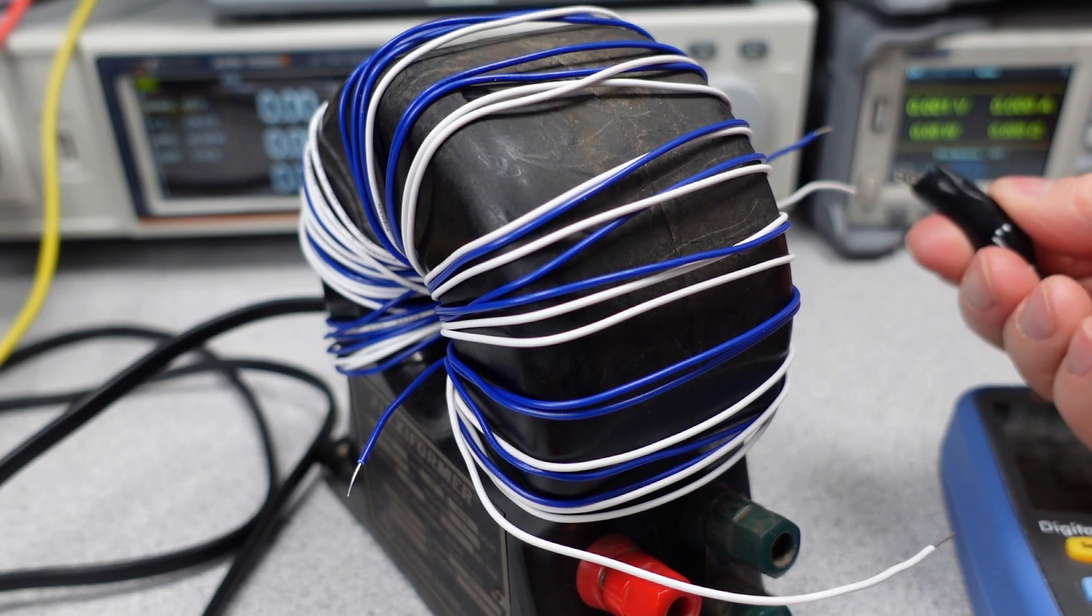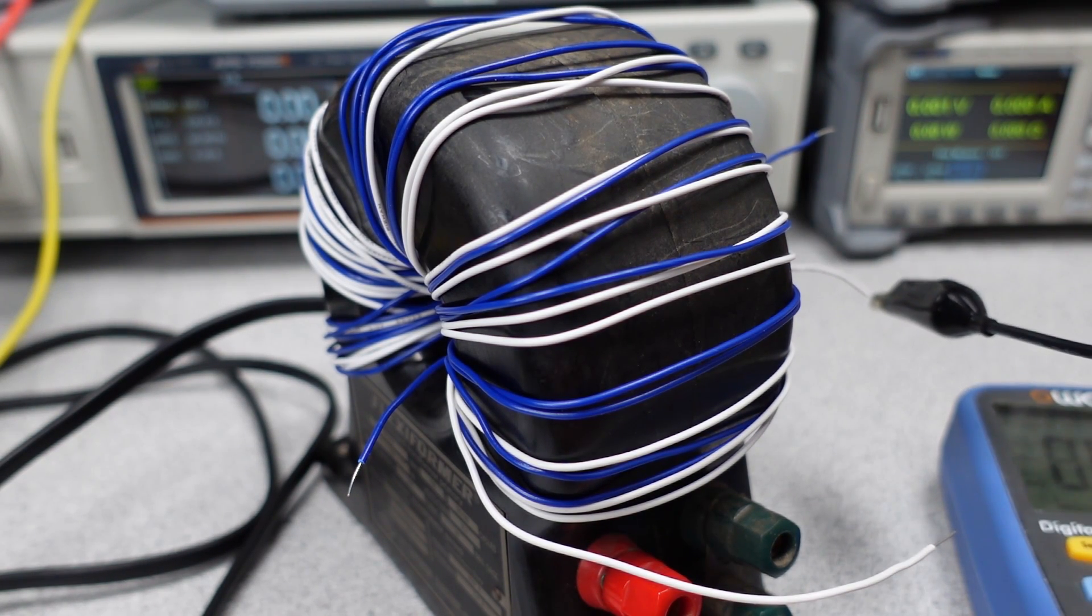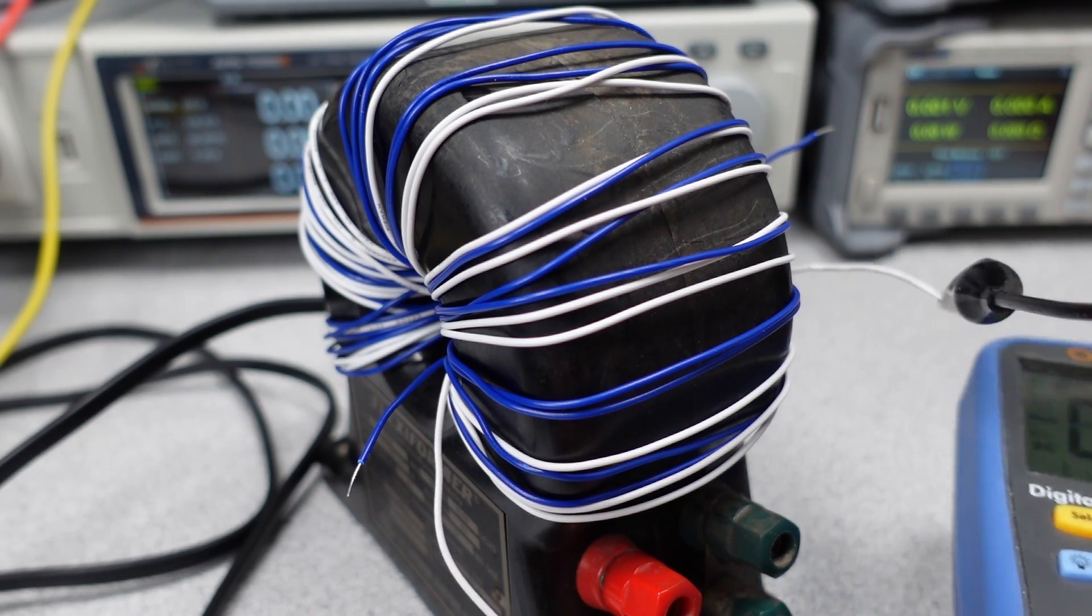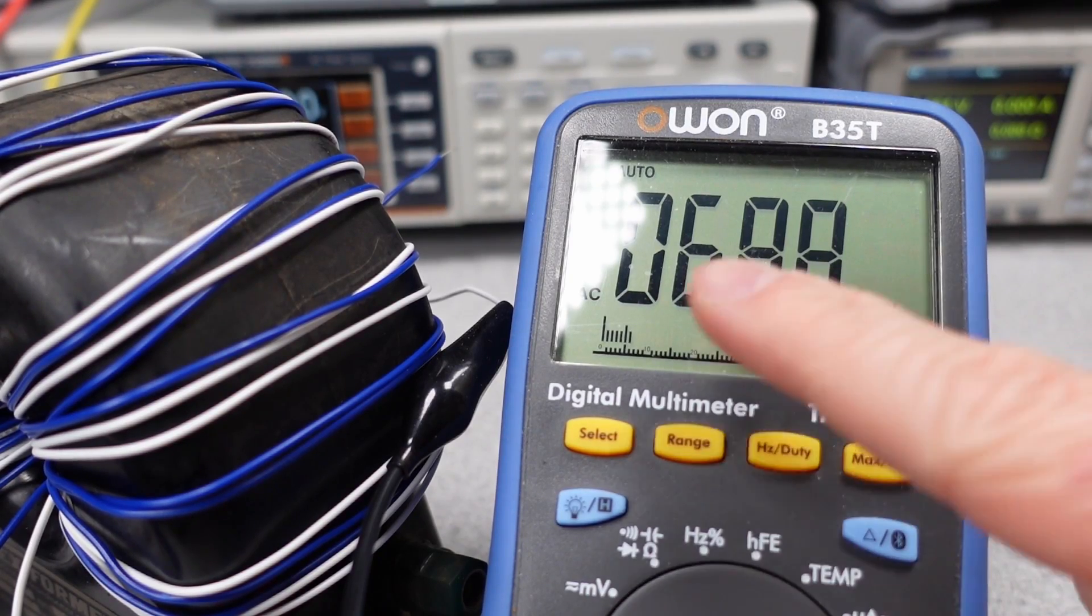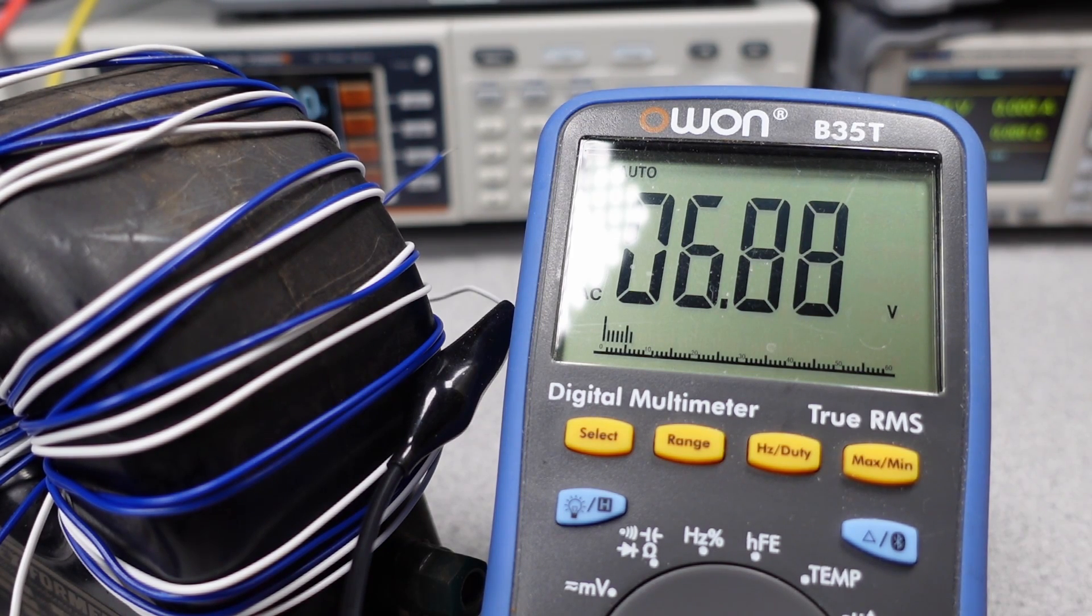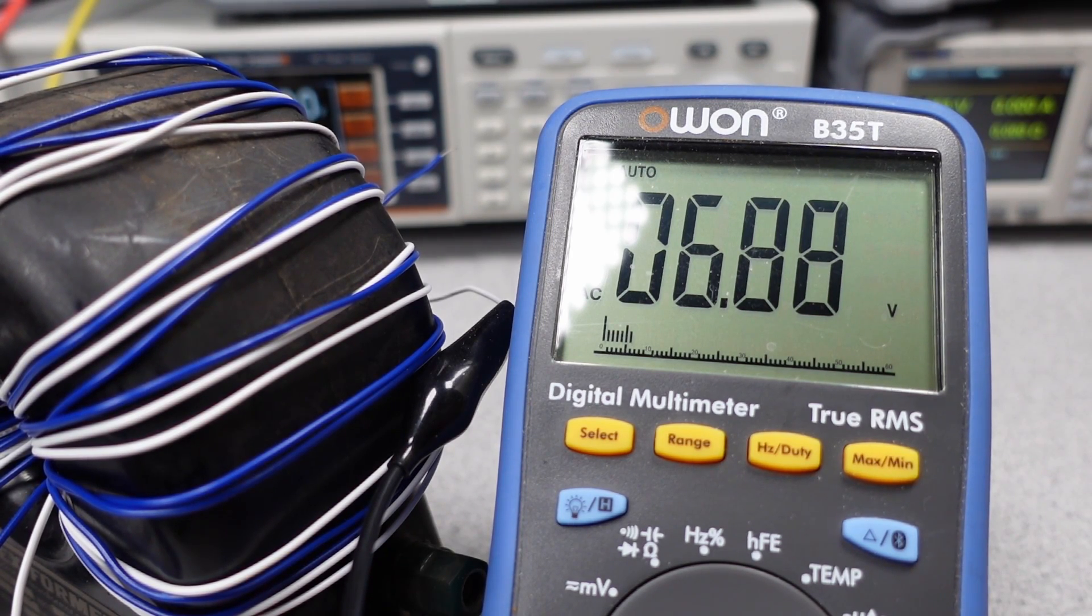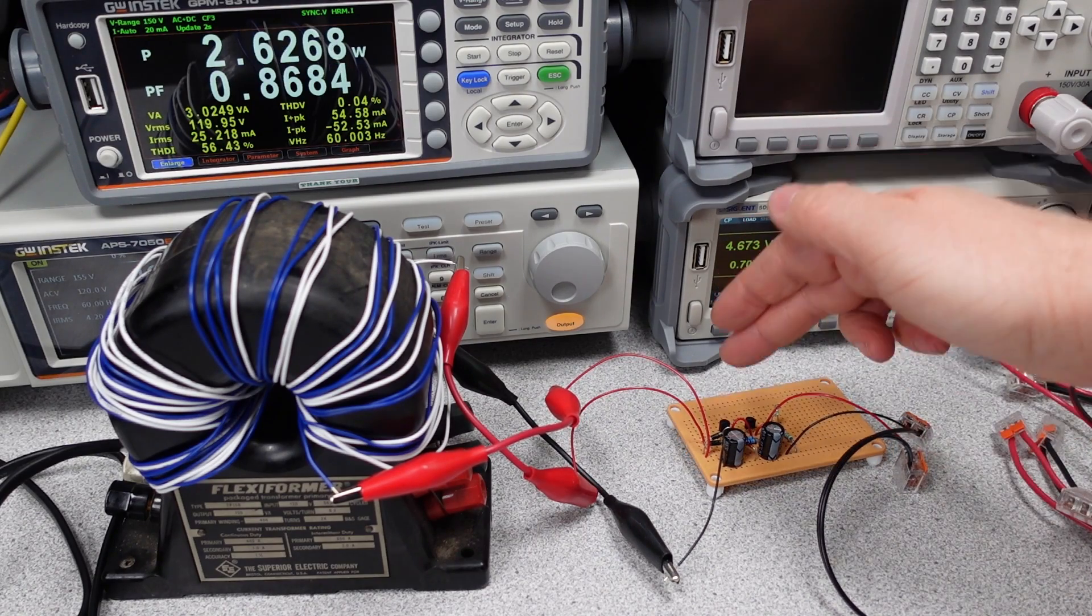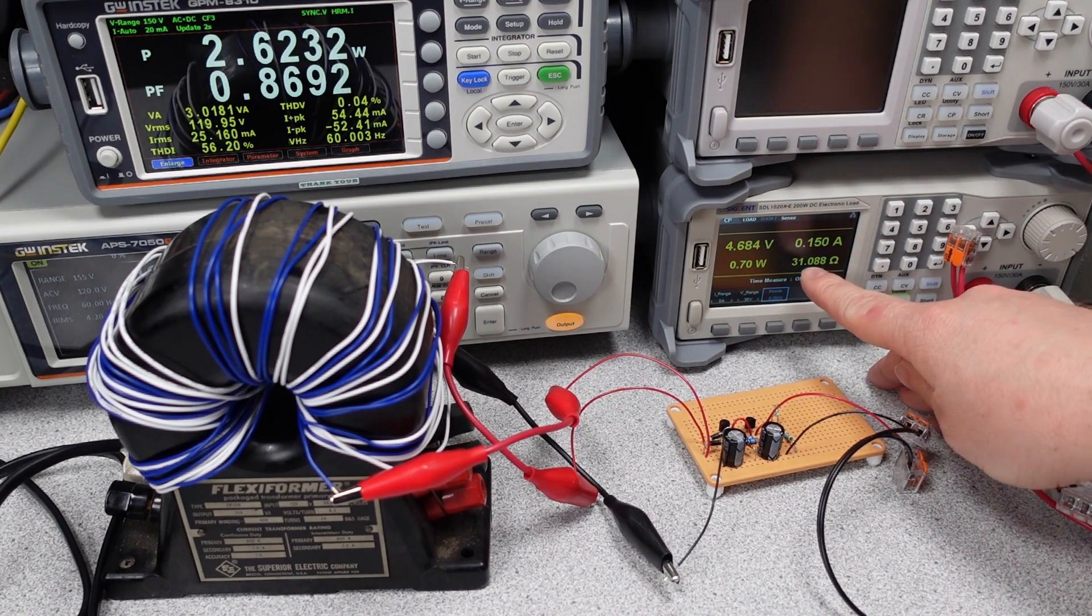So rather than having to go and buy a custom transformer and wait for it to arrive, or having to wind 400 terms of primary yourself, this saves time and effort for making circuits powered from mains. I know today it is mostly out of date with modern DC power supplies, but this is a vintage device and it shows how things used to be done. It's a fun thing to learn a little bit about the history of electronics.